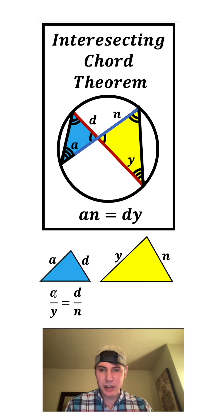And then to simplify this, we can cross multiply. a times n gives us an, and that's equal to d times y.